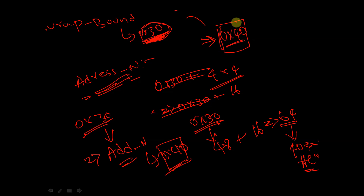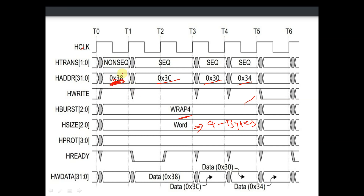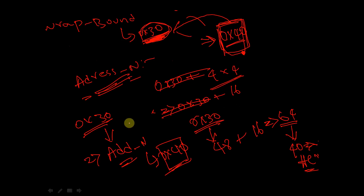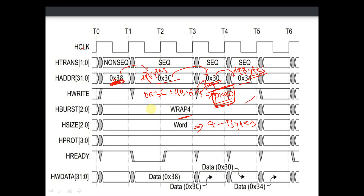So when we reach address_n, which is 0x40, the address should wrap around to 0x30. In the example, the address is incrementing by 4 bytes going to 0x3C, then 0x3C plus 4 bytes would go to 0x40. Since 0x40 is address_n, we wrap back to the wrap boundary, which is 0x30, and the address continues incrementing by plus 4 bytes. This is how we calculate the wrap boundary and the maximum address limit.